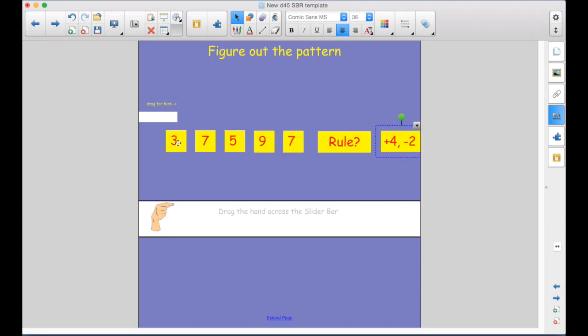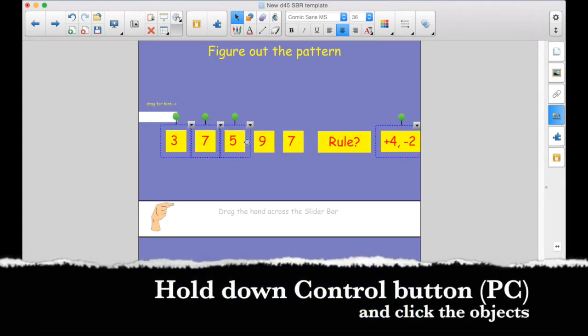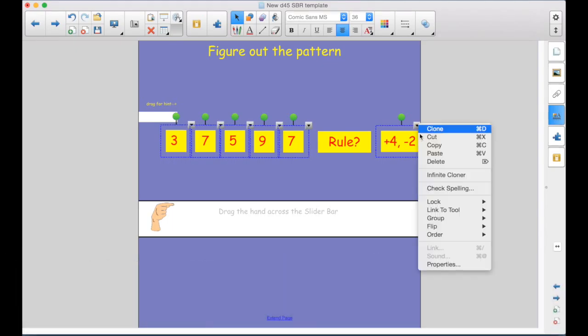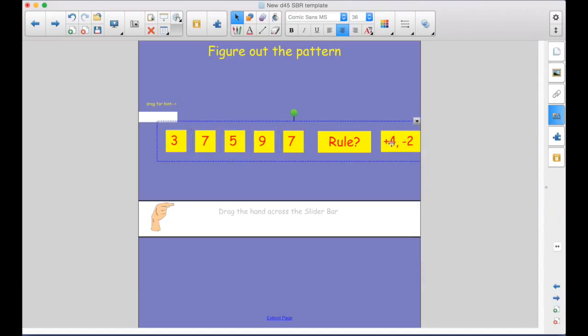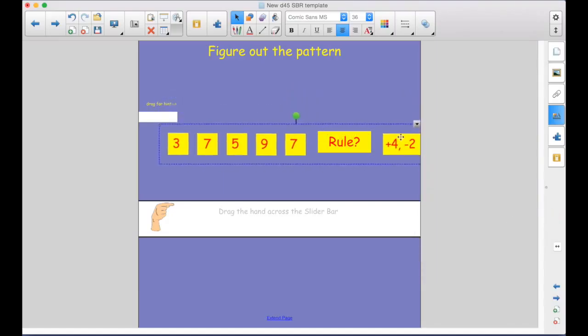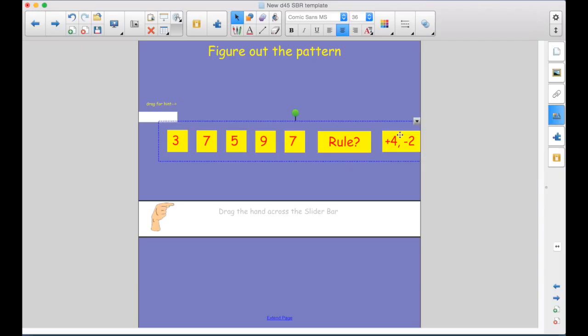So I'm going to hold down the control button on a PC, command button on a Mac, and select those. And I'm going to group them. I like to group things that have to stay together because now these are a group, not the rule, because that has to be in a different layer.